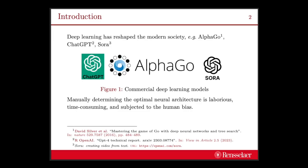Deep learning has reshaped modern society, and we can find a bunch of commercialized AI products such as AlphaGo, ChatGPT, and Sora. Manually determining the optimal neural architecture is laborious, time-consuming, and subjected to human bias.